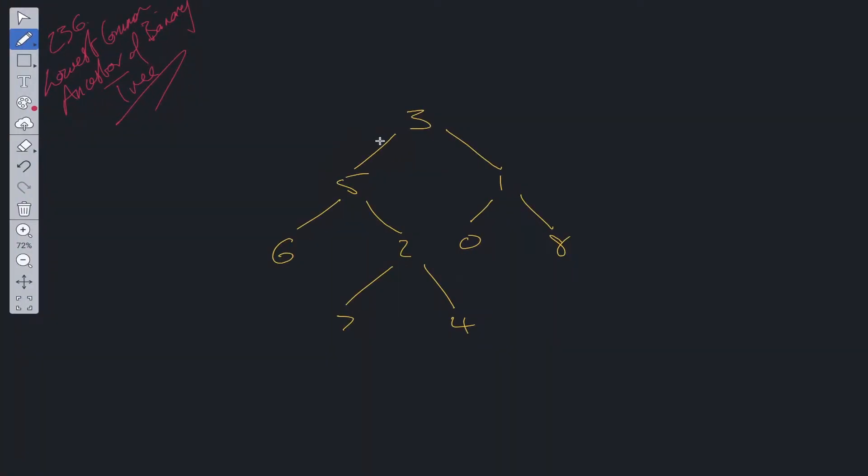We'll be utilizing recursion in this solution. The basis is we want to traverse to the lowest depths. In this example, we want to traverse to say 6 to begin with. So left, then right, then root—post-order traversal.